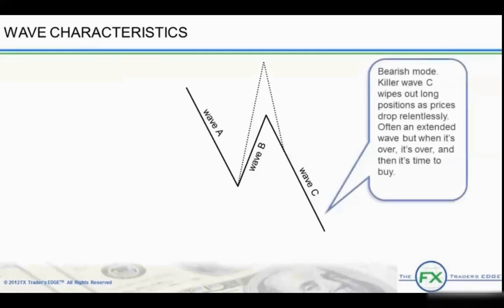However, a five-wave move in wave A followed by a three-wave correction in wave B provides a great setup for positioning for the wave C move down. Wave C is often called the killer wave, for it can be just as strong and long as a wave three. It knocks all of the long positions out of the way in the case of an impulsive uptrend. But once wave C is done, it is done. Targeting the end of wave C is a good time to go long again. However, a highly profitable trade is to sell the corrective wave B pullback to be able to ride that killer C wave.